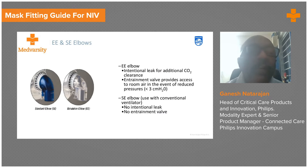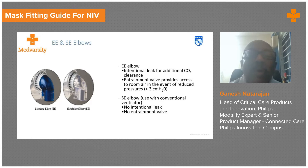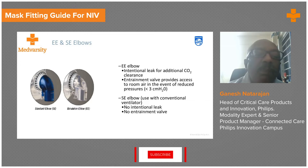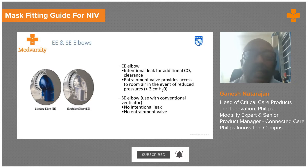In a complete full face mask, there are two kinds of exhalation ports: an E port, which is an exhalation elbow where the patient exhales out to atmosphere, and an SE, which is a standard elbow where the patient exhales out into the equipment via a dual limb circuit.